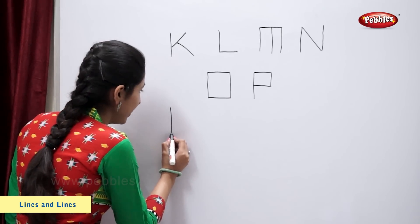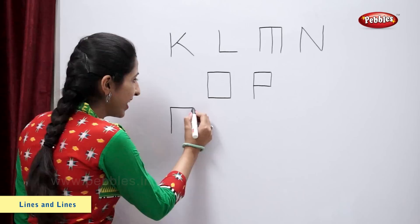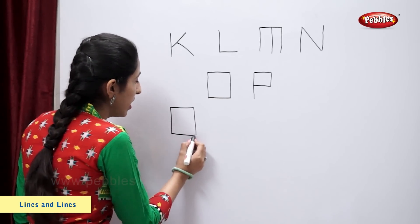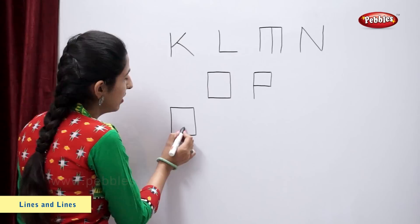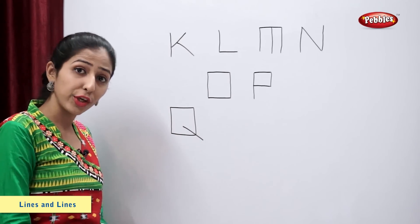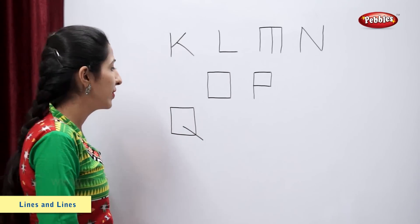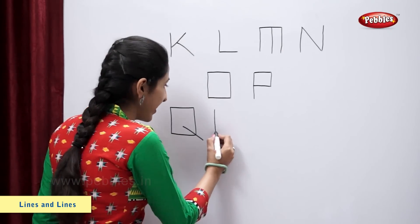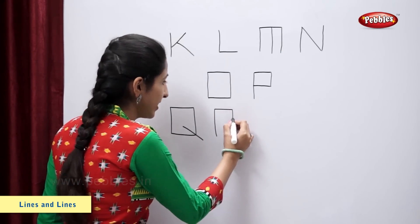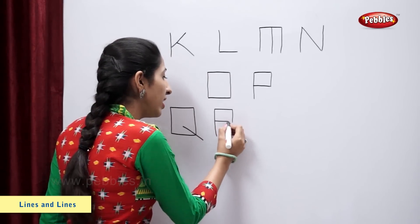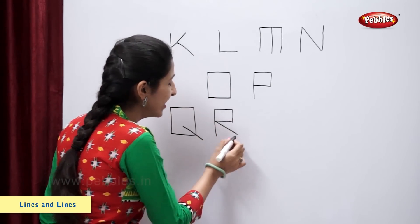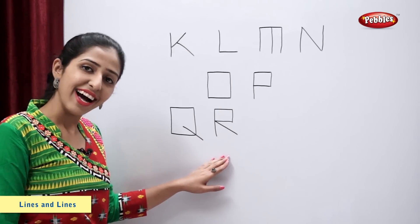Standing line, a slanting line. Standing line, a slanting line — letter Q. Standing line, sleeping line. Standing line, another sleeping line. A slanting line — letter R.